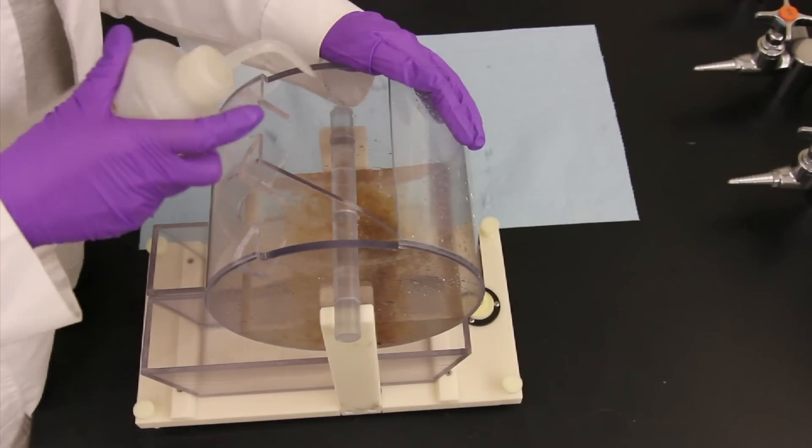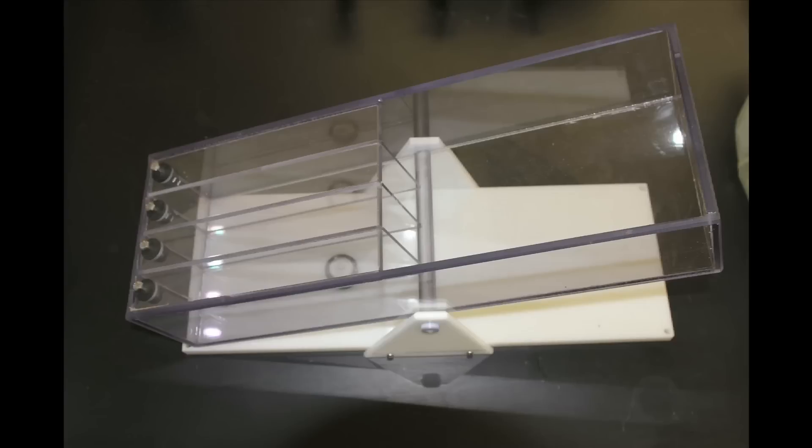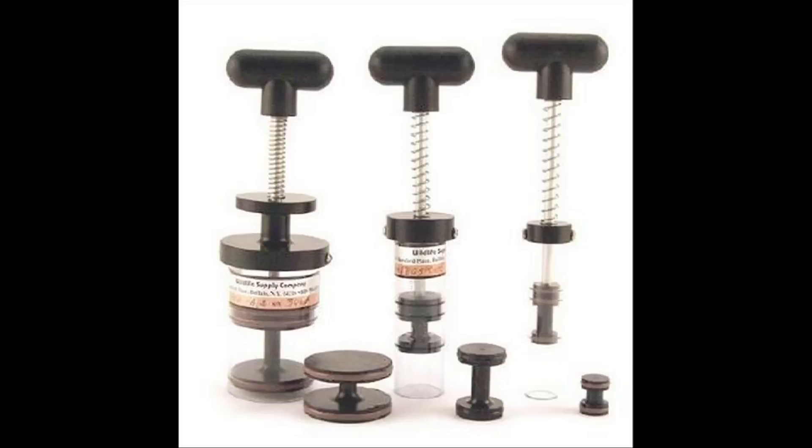Two of the most common are the Folsom Plankton Splitter and the Mototo Box Splitter. In addition, the Stimble Pipette may also be used to subsample zooplankton.